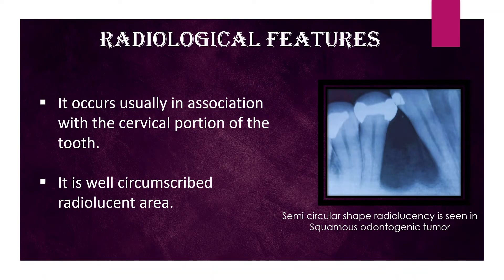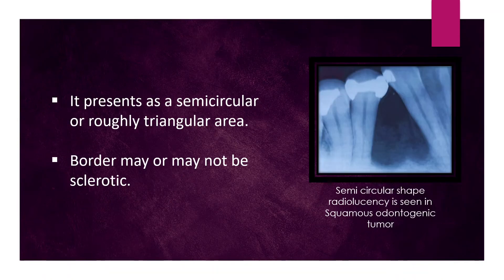Radiological features. It occurs usually in association with the cervical portion of the tooth. It is a well-circumscribed radiolucent area, presenting as a semicircular or roughly triangular shape. The border may or may not be sclerotic.